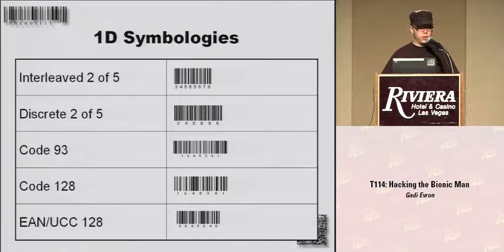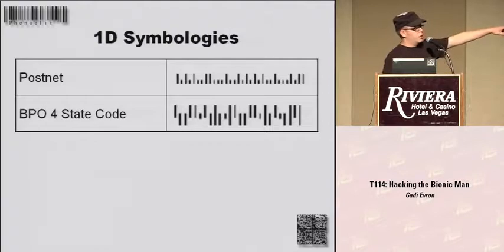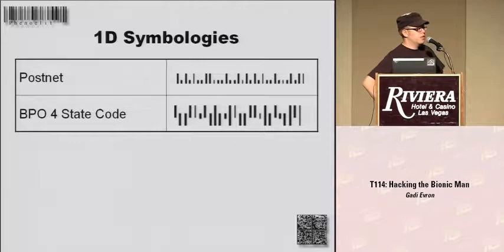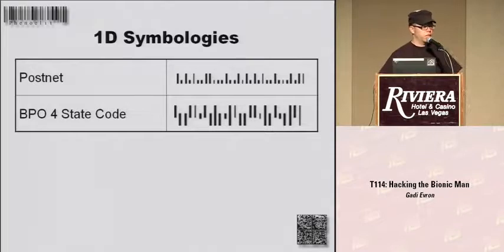Then you have really weird barcodes. The upper one you've probably seen on envelopes — this is actually a PostNet barcode, routing information for letters. The British, always being their separate island folks, had to invent their own postal barcode that roughly looks the same, but it's the British one. And then we have two-dimensional barcodes. If you look at your badge, who can tell me what type of barcode you have on your badge? Datamatrix. That is right.